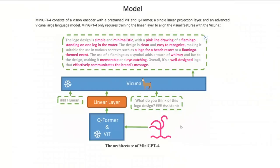For example, based on the trained model, the output for a flamingo logo is: 'The logo design is simple and minimalistic, with a pink line drawing of the flamingo standing on one leg in the water.' The approach they took for training and fine-tuning is very simple, but the results are pretty amazing.